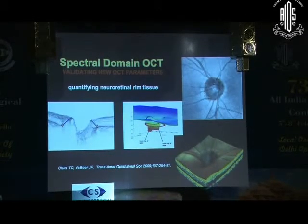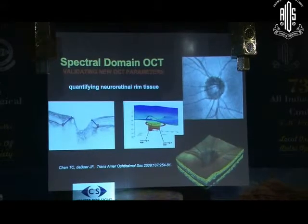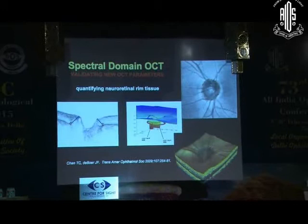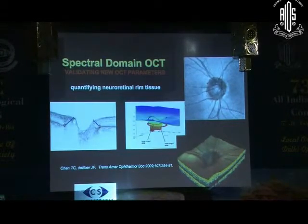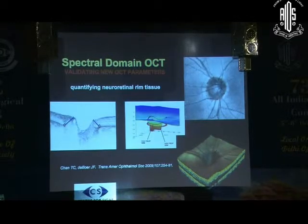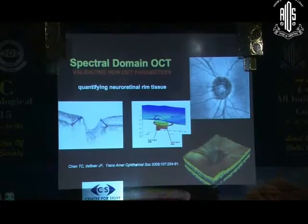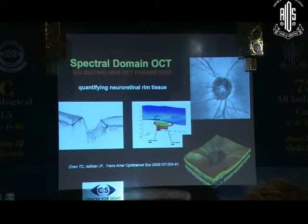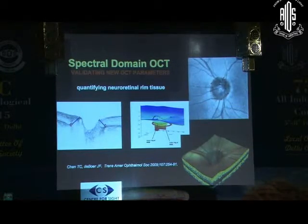The optic disc centration makes it possible to center the RNFL calculation concentric to the disc at a radius of 3.45 millimeters, and this has reduced fallacies due to wrong scan placement. Another advantage is that you have a baseline 3D OCT scan that gets registered, so subsequent tests can be done at the same location, with a test-retest variability of less than 1 micron.